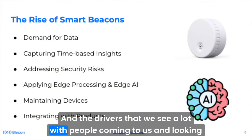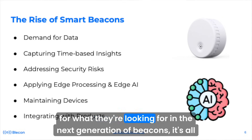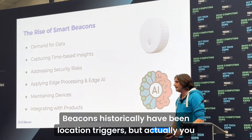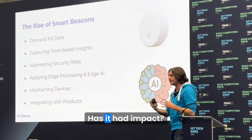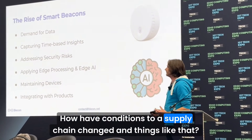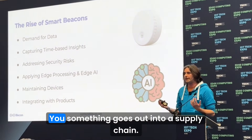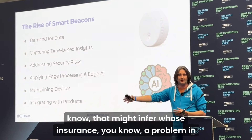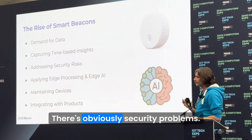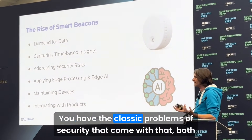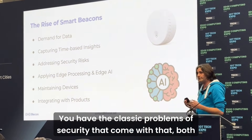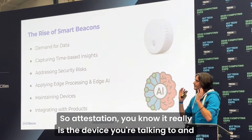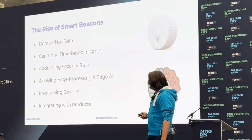The drivers we see in people looking for the next generation of beacons are all rooted in a demand for data. Beacons historically have been location triggers, but now you want to find out what a thing is doing, whether it's had an impact, how conditions through a supply chain have changed. You want to do that with time — something going out into a supply chain, you want to know when things happen, which might relate to insurance liability. There are obviously security concerns once data is flowing: both encryption and integrity — attestation — so you really know it's the device you're talking to.